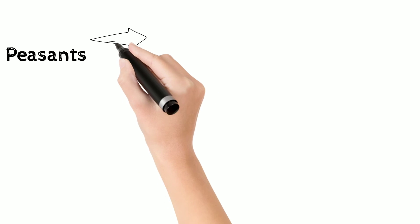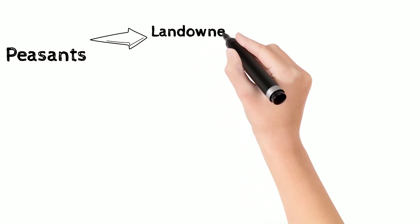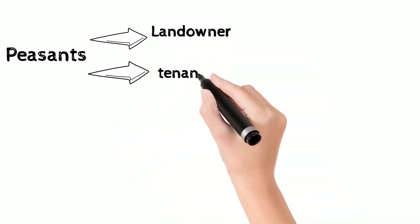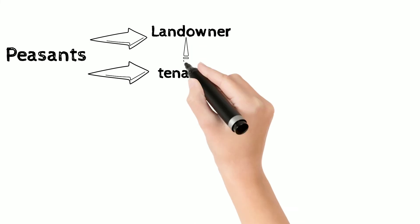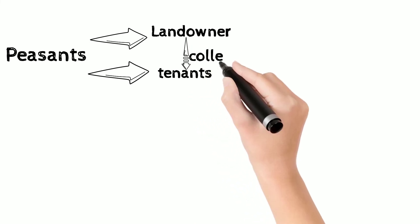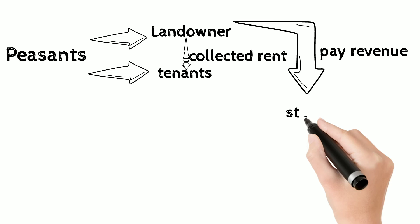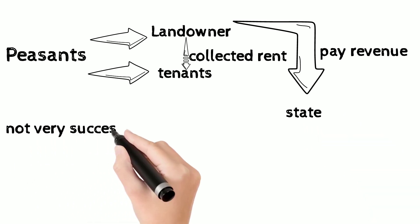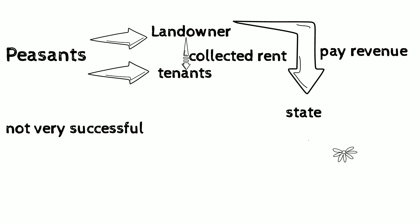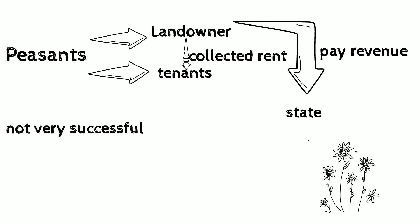Peasants were of two types: some were landowners and some were tenants. Landowners collected rent from tenants and paid revenue to the state. But this was not very successful because the jhum cultivators weren't able to produce crops — the land was infertile, the soil was dry.